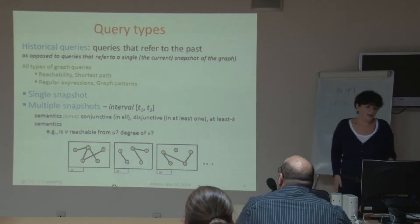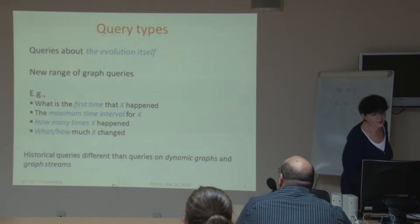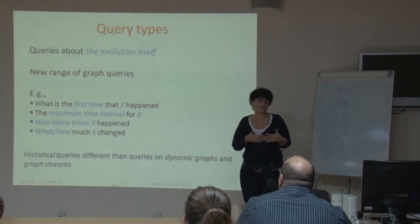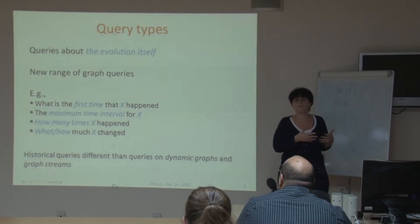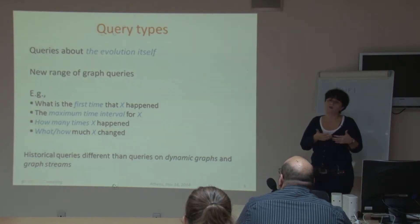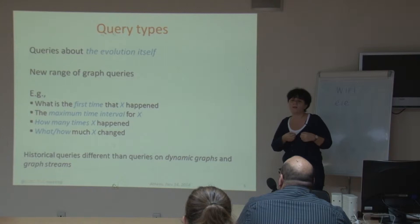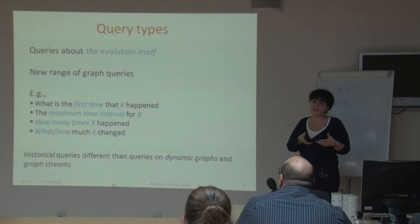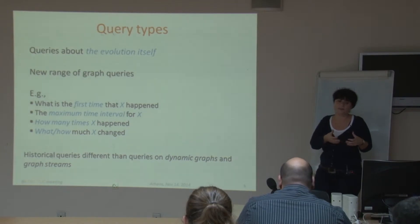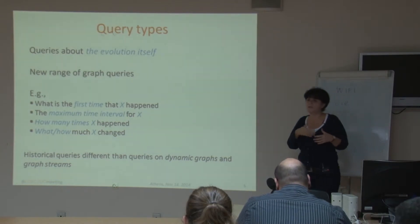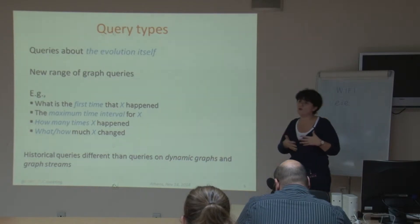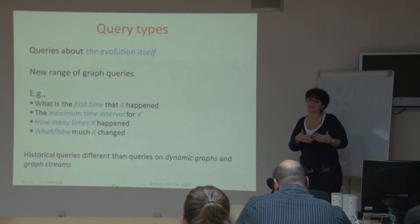We can also have other types of semantics: elements that are active in at least one snapshot, or elements that are valid at at least k of the snapshots. Besides historical queries, we can have queries about the evolution itself — for example, what is the first time that a pattern appeared, or the maximum time interval where a specific pattern was present, or how many times a specific graph pattern appeared. We may also want to monitor the evolution of graph patterns in a query.